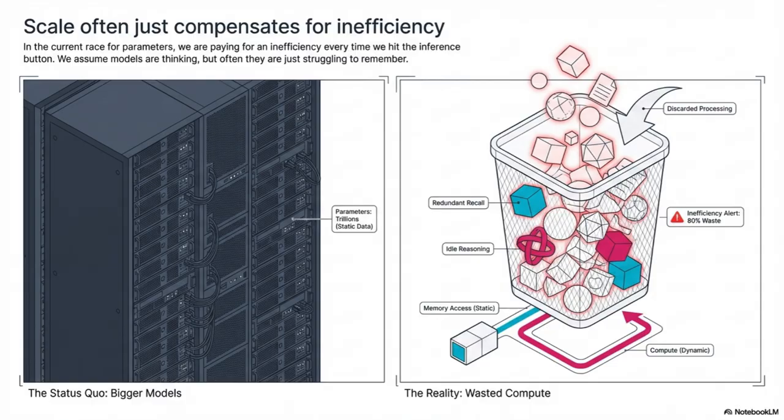So they're forced to simulate that retrieval by burning compute — precious attention and MLP depth right there in the early layers of the stack. And that compute is basically being stolen from the complex, multi-step reasoning the model should be doing later on. That's an inefficiency you are paying for every single time someone hits the inference button.